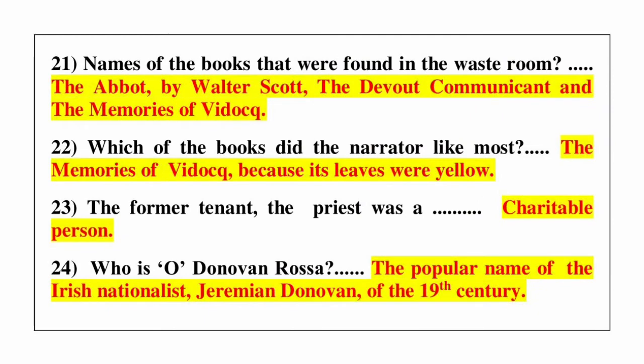Question number 21: name of the books that were found in the waste room? Answer is The Abbot by Walter Scott, The Devout Communicant, and The Memoirs of Vidocq. Question number 22: which of the books did the narrator like most? Answer is The Memoirs of Vidocq because its leaves were yellow.